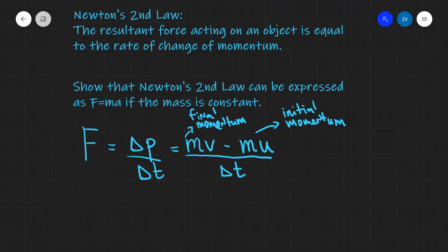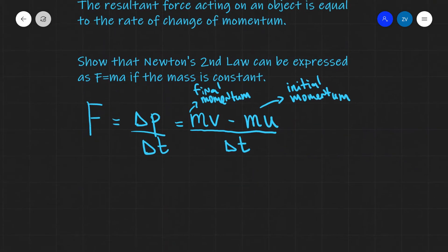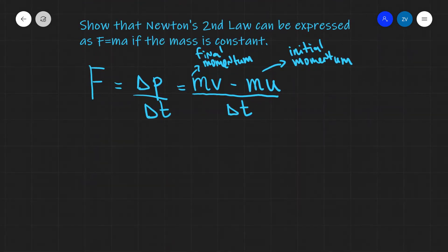Now if the mass is constant, we can factorize this. So if you are proving this in an exam question, what I would do is just simply write that assuming the mass is equal to a constant. What we can do is factorize this out.